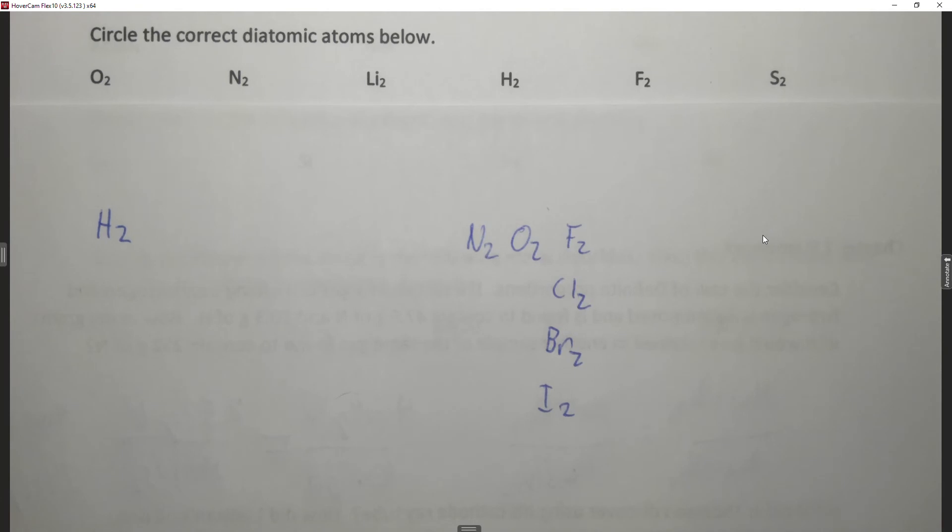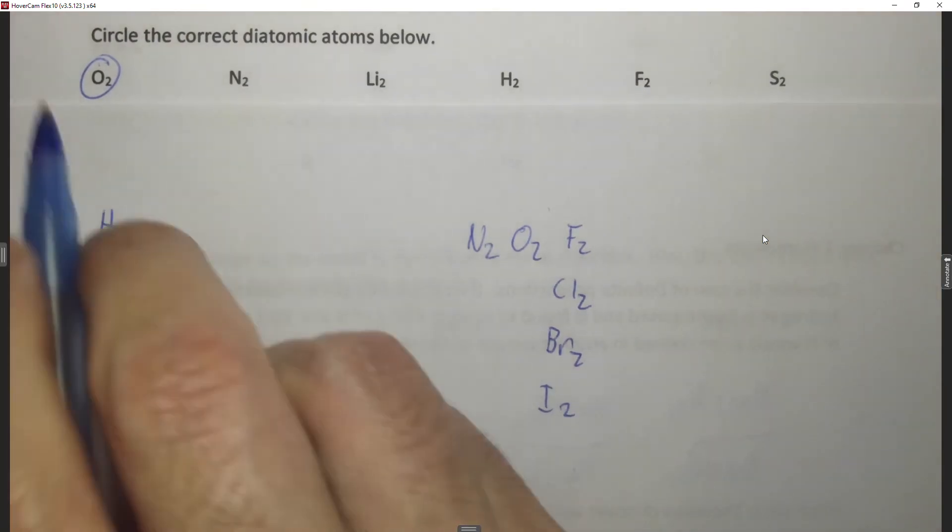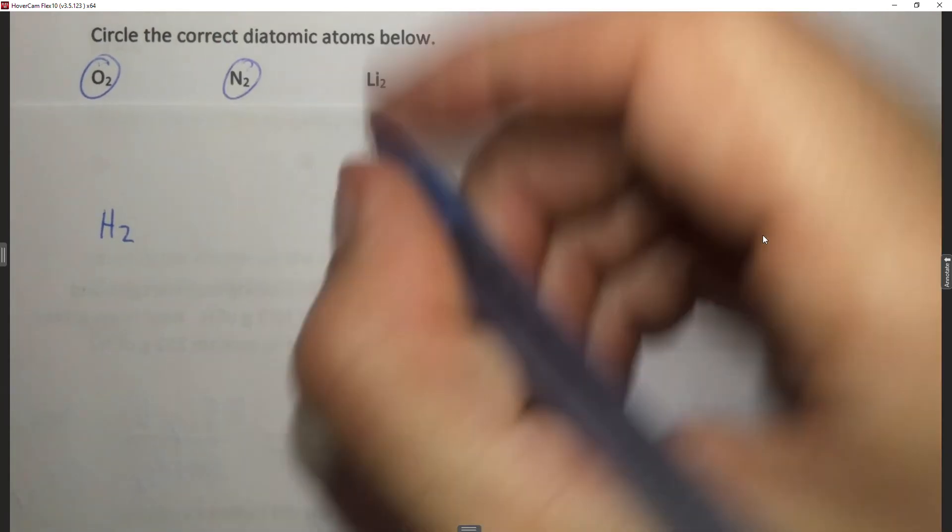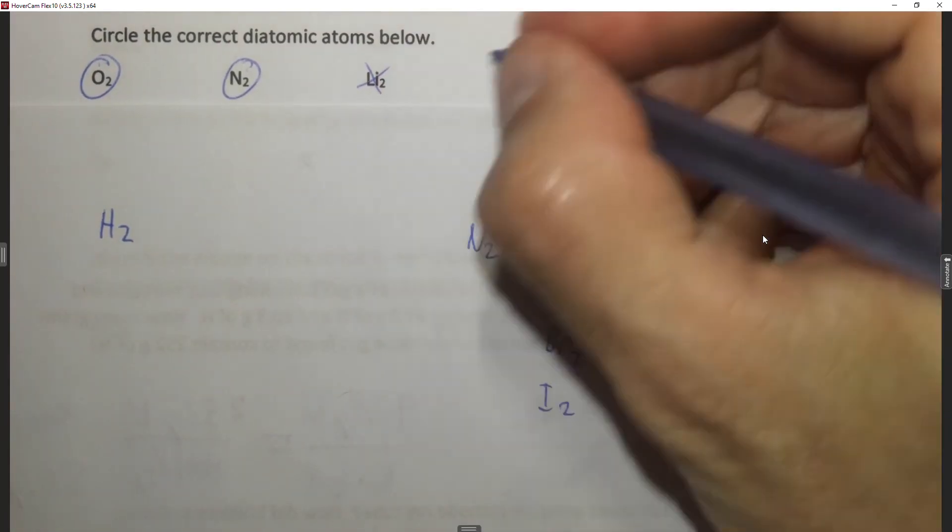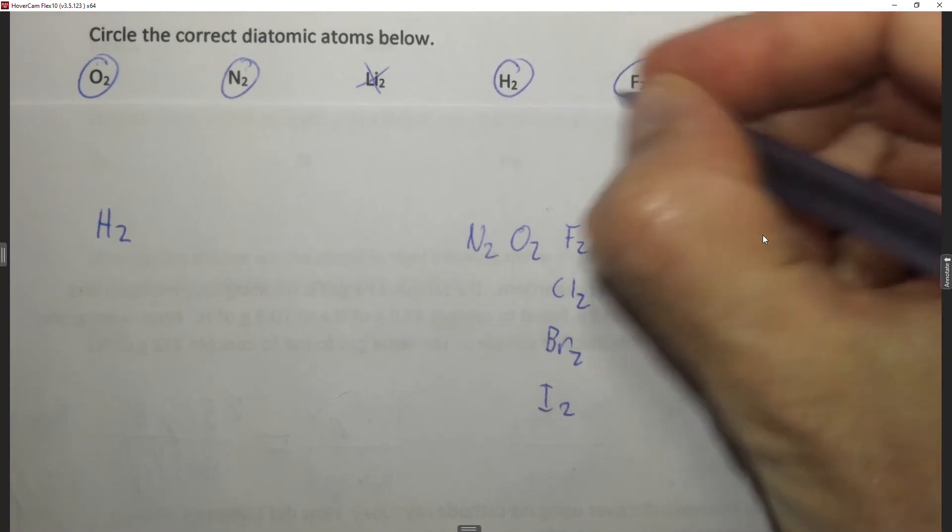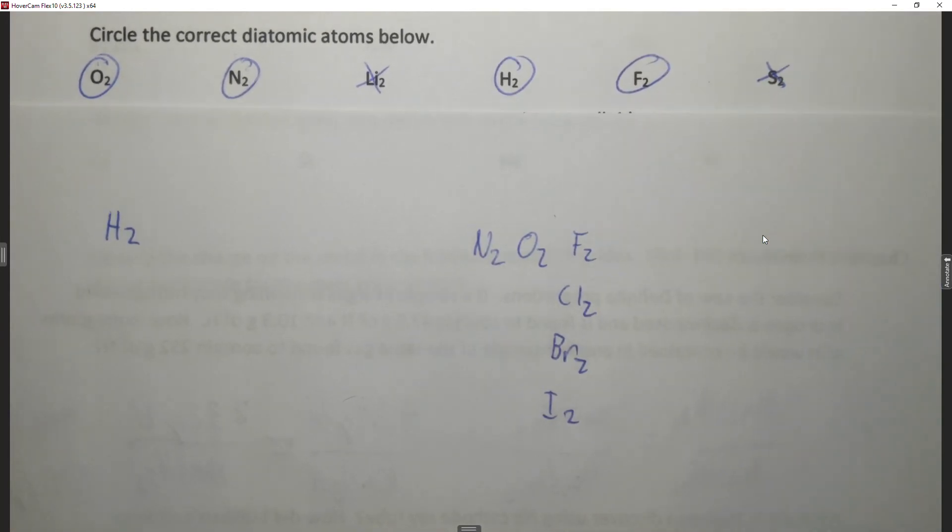Now to answer this question, to circle the ones that are correctly diatomic atoms: oxygen is one, nitrogen is one, lithium is not one, hydrogen is one, fluorine is one, and sulfur is not one. Okay, so it's these seven.